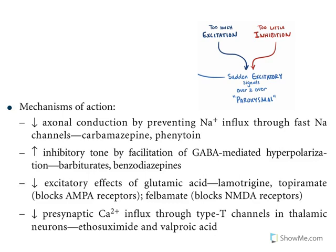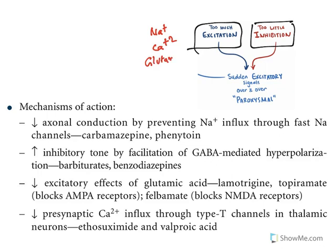Now for treatment — epilepsy is because of either too much excitation or too little inhibition. Too much excitation is caused by sodium entry, calcium entry, or glutamic acid, which is an excitatory neurotransmitter. Too little inhibition is because of reduced GABA. To treat epilepsy, we need to reduce excitation or increase inhibition. Look at the mechanisms.